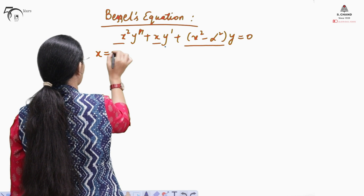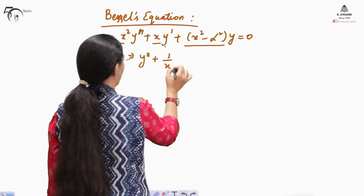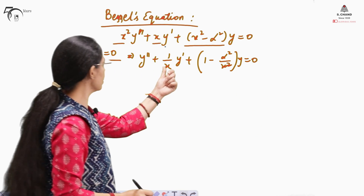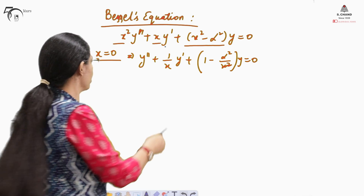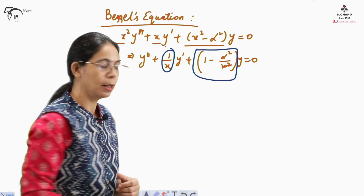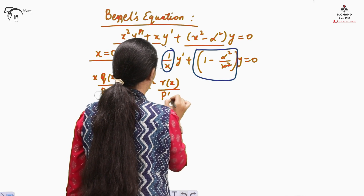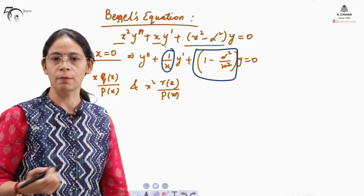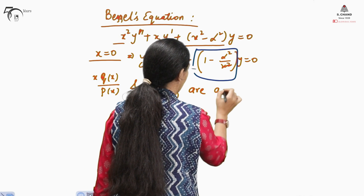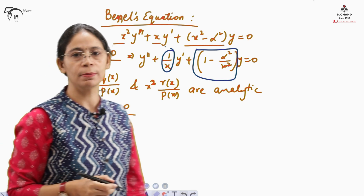We need to find the solution about x equals 0. Dividing the differential equation by x², it becomes y'' + (1/x) y' + (1 − α²/x²) y = 0. So q(x)/p(x) = 1/x and r(x)/p(x) = (1 − α²/x²) are not analytic at x equals 0. However, x·q(x)/p(x) = 1 and x²·r(x)/p(x) = (x² − α²) both become analytic at x equals 0. Therefore, x = 0 is a regular singular point, and the Frobenius method will be used.